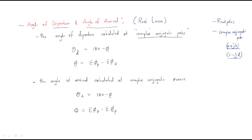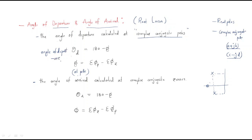If a pole consists of a real part and imaginary part, it is a complex conjugate pole. The angle of departure formula is: θd = 180 − φ, where φ equals the summation of pole angles minus the summation of zero angles, evaluated at that particular complex conjugate pole. θd is the angle of departure.